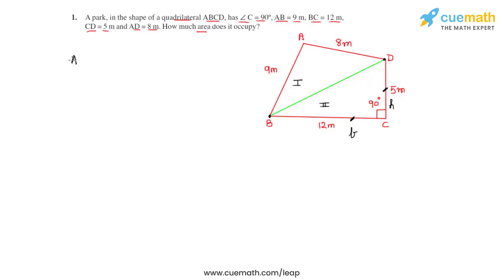So the area of triangle BCD can be directly found by making use of the formula half into base into height. Let's substitute the values. So we get 1/2 times 12m times 5m. That on calculation gives us that the area of triangle BCD equals 30m squared.